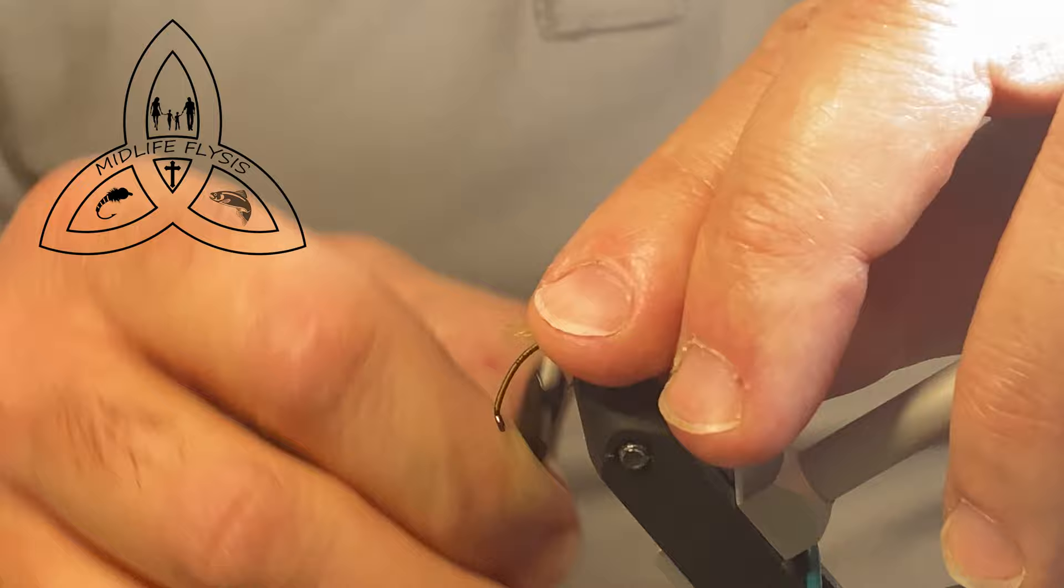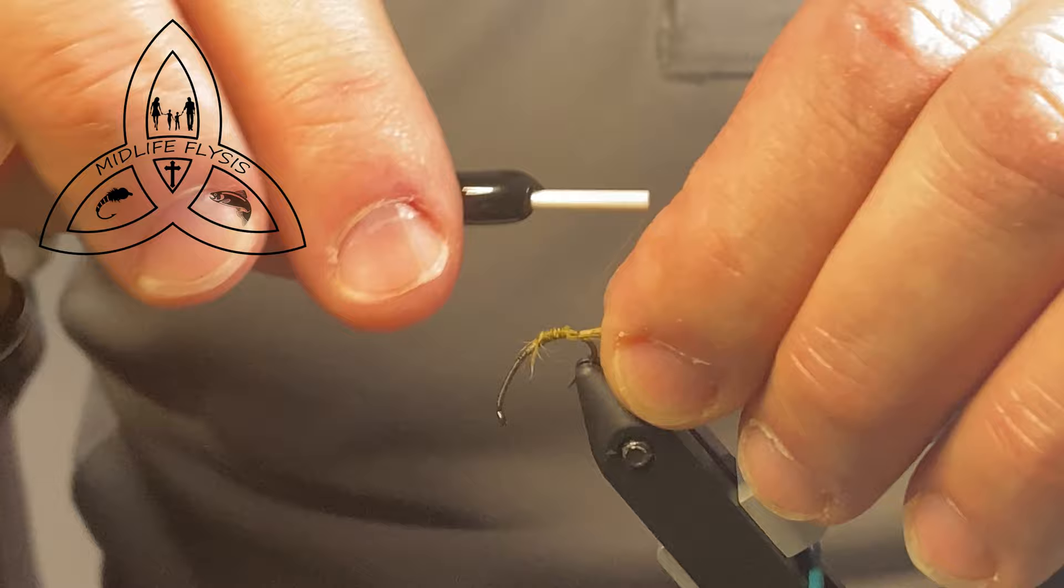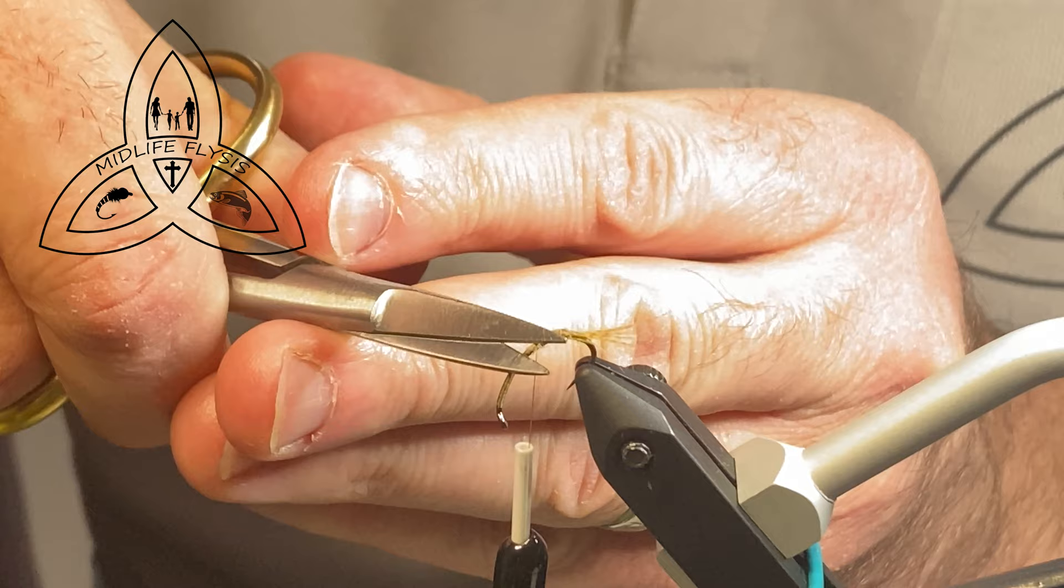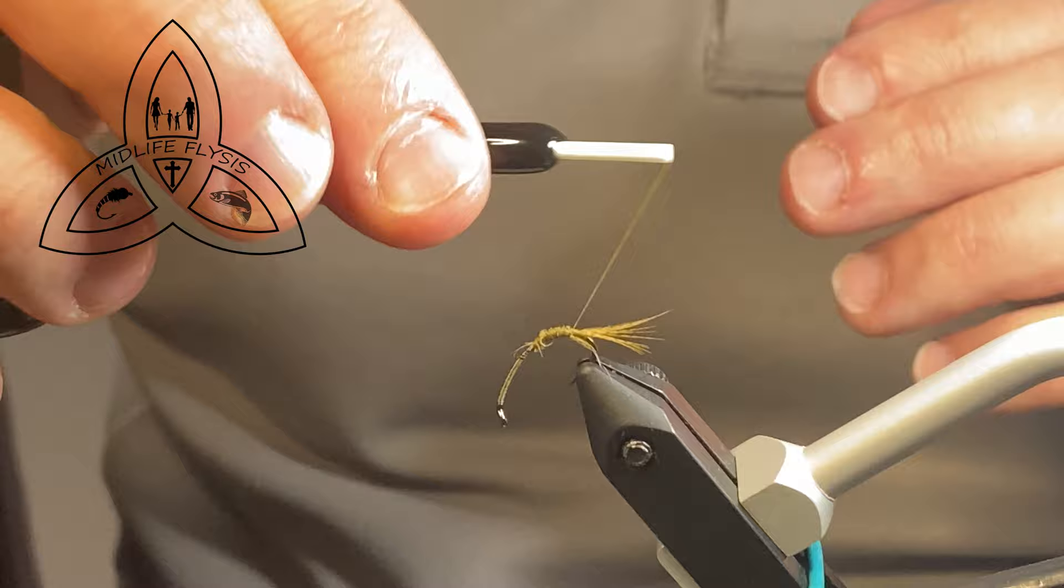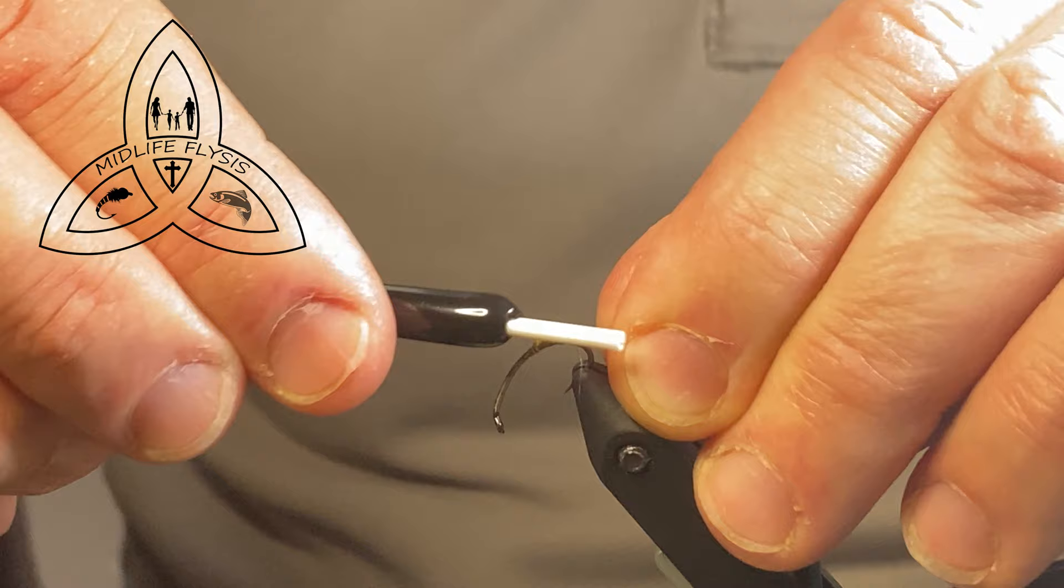I used to do this with midge tubing, which made the back end, the trailing shuck fatter and probably more realistic looking, but it added too much weight to the fly. After I switched to tinsel instead, I still got the shiny emerging kind of look to it without the extra weight. It's easier to tie with the tinsel and this fly floats better now.